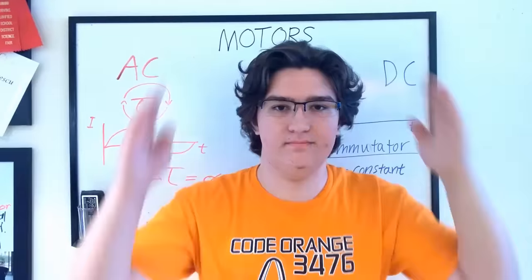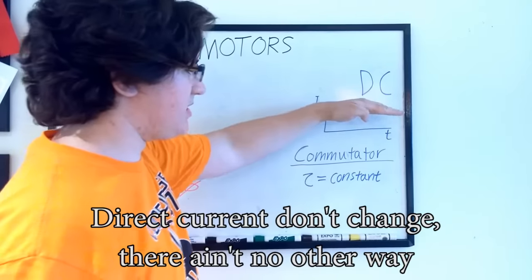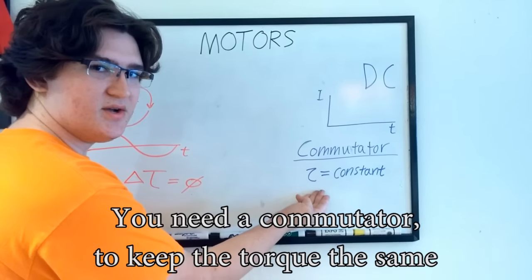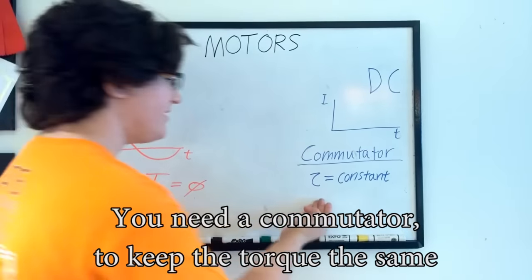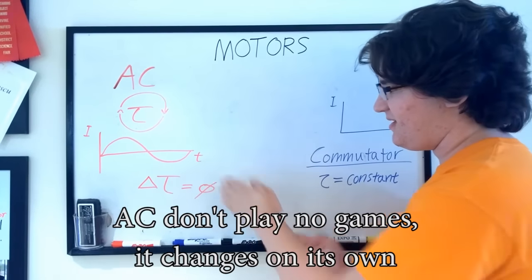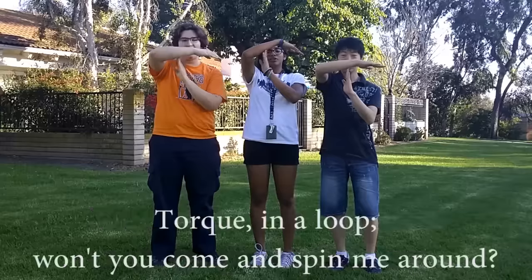There are two types of motors, AC and DC. Alternating current inverts the torque you see. Direct current don't change, there ain't no other way. You need a commutator to keep the torque the same. AC don't play no games, it changes on its own, keeps that torque consistent, no stopping now.